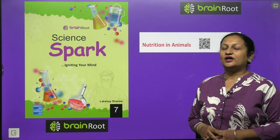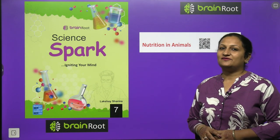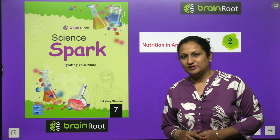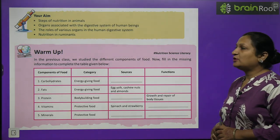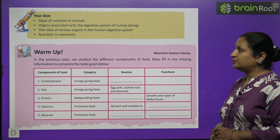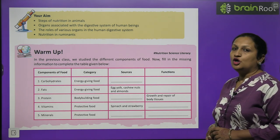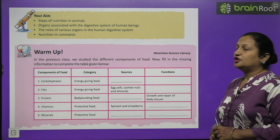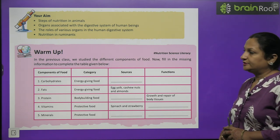Hello my dear children, this is Shikha Arora and today we are going to start with Class 7 Science Chapter 2, that is Nutrition in Animals. The main aim of this chapter includes steps of nutrition in animals, organs associated with the digestive system of human beings, role of various organs in the human digestive system, and nutrition in ruminants.